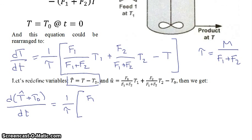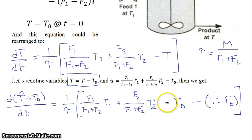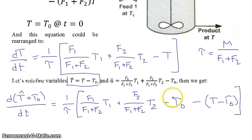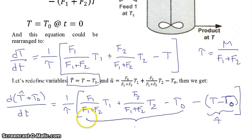What we've done is substituted T-hat plus T0 in for T, and then subtracted off T0 from both sides. Because subtracting a subtraction adds a T0 here, and subtracting it off there, we end up with our two key groupings.